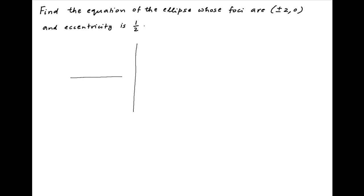We start by plotting the given information on the Cartesian plane. We are given an ellipse whose foci are the points F1 with coordinates (2,0) and F2 with coordinates (-2,0).